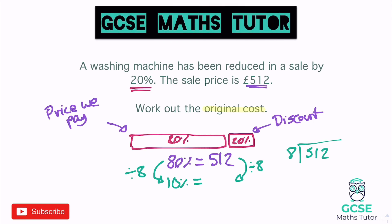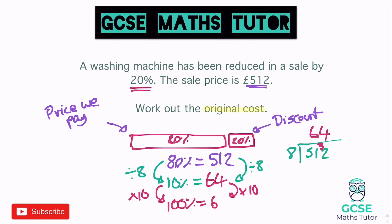So going ahead and dividing by 8: 8 doesn't go into 5, but it goes into 51 — up to 48 — that's 6 times with a remainder of 3, leaving us with 32. And 8 goes into 32 four times, so that gives us 64. So 10% is £64 of that original cost. Now we can turn that back into 100%: once we've got 10%, to get back to 100 you just times by 10, and that gives us 100%. So times 64 by 10 gives us £640. So our final answer is £640.